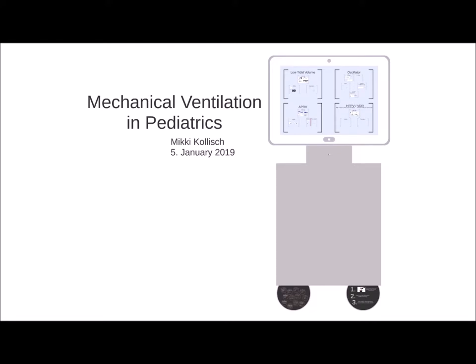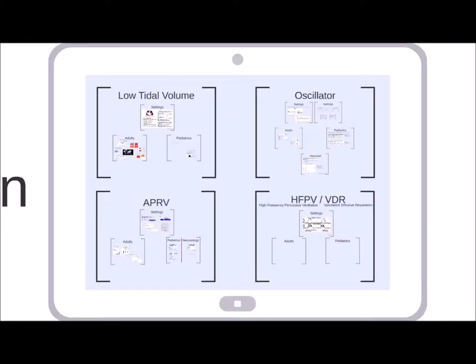In volume control you set the tidal volume and the plateau pressure becomes the dependent variable; in pressure control you set the plateau pressure and tidal volume becomes dependent. In the end they're very similar systems. Both pressure and volume control are generally set with low tidal volume ventilation — and there's a great randomized control trial showing it decreases mortality. Non-conventional modes include the oscillator, APRV (airway pressure release ventilation, also called bi-level, bi-vent, or bi-PAP plus), and high-frequency percussive ventilation or volumetric diffusive respiration (VDR).